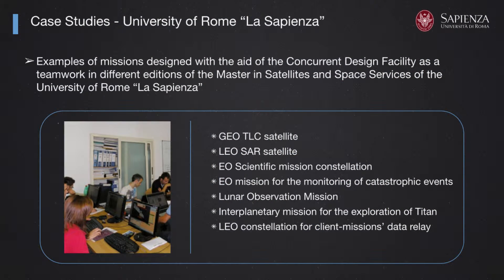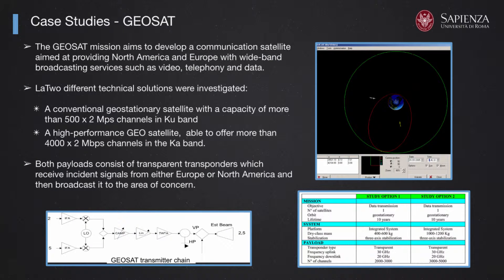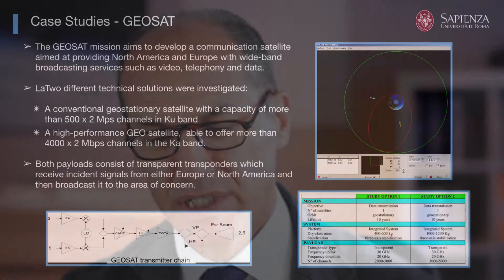At the end of the presentation I will provide references to papers and documents where you can deepen your knowledge about each of these studies. In the starting years of our Master in Satellites, we began with a geostationary mission. The aim of the study was to develop a communication satellite providing North America and Europe with wideband broadcasting services such as video, telephony, and data. We made a trade-off study with different solutions, and here I am illustrating some of the outcomes.